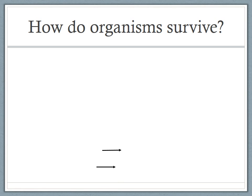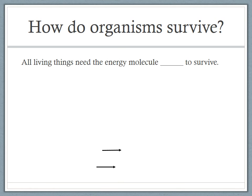Cell Respiration is basically about how organisms survive and how they get the energy they need to survive. All living things need energy, and the molecule that we all use to survive is ATP. We've talked a little bit about ATP before, but now we'll talk about where it's created and how it's created.